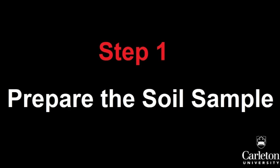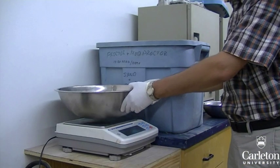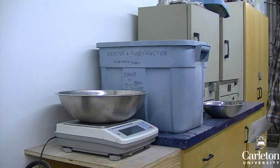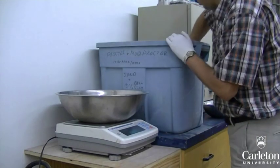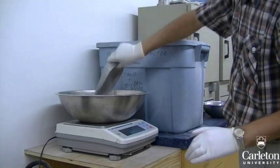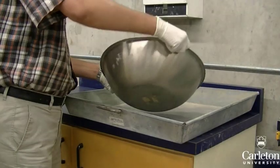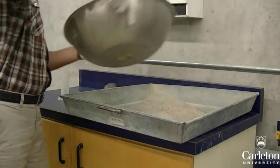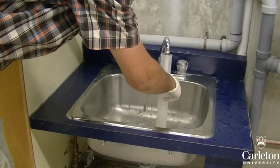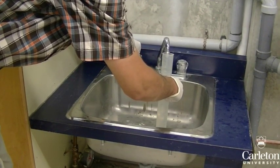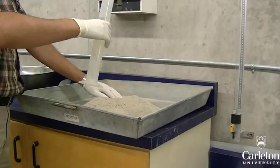To perform either of the compaction tests in this lab, we will need about 6 pounds or 3 kilograms of dry soil passing sieve number 4. Place an empty container on the scale, zero the scale, and measure this amount. Record the mass of the sample as the dry mass. Before you add water to the sample, empty the sample into a metal tray. Now you will need to add water to the sample for a moisture content of about 5%. Calculate the amount of water needed by multiplying the dry mass by 0.05. Measure out the amount of water needed in a graduated cylinder and mix it with the sample.